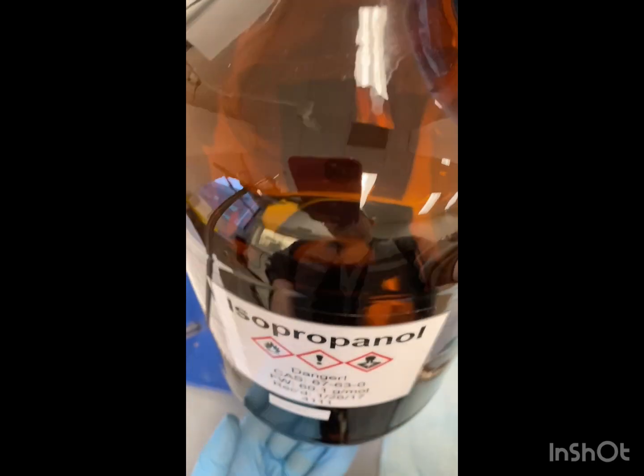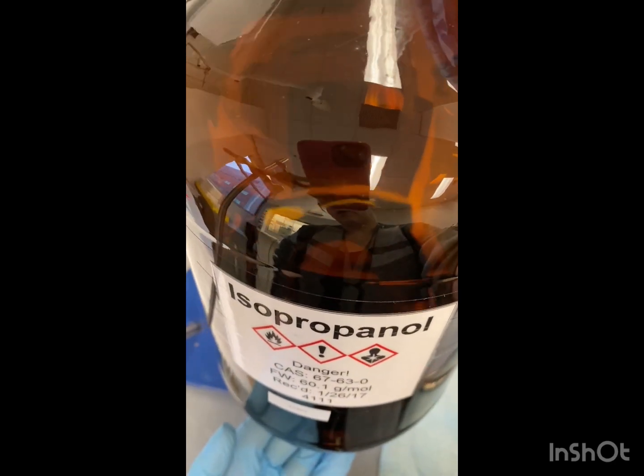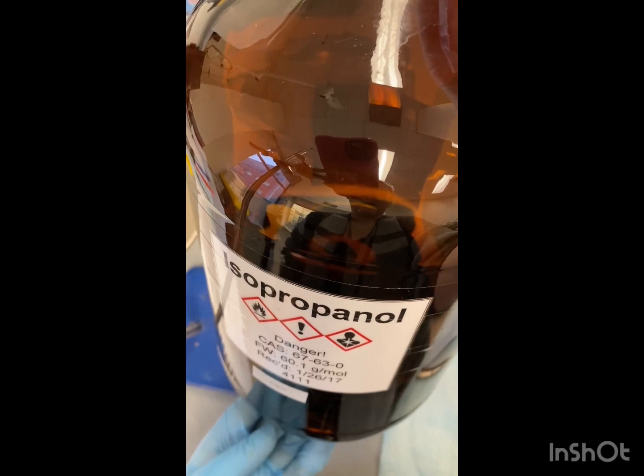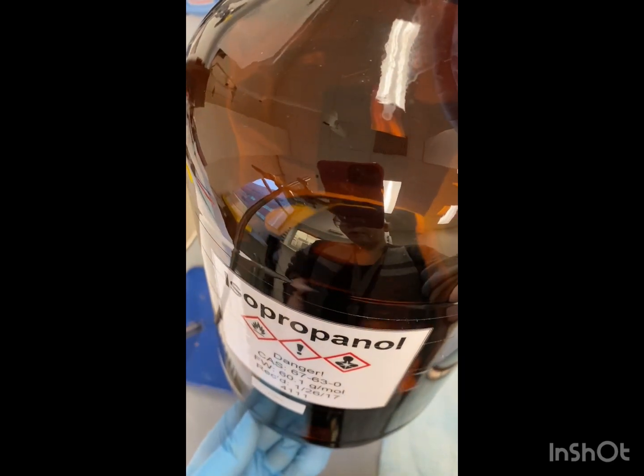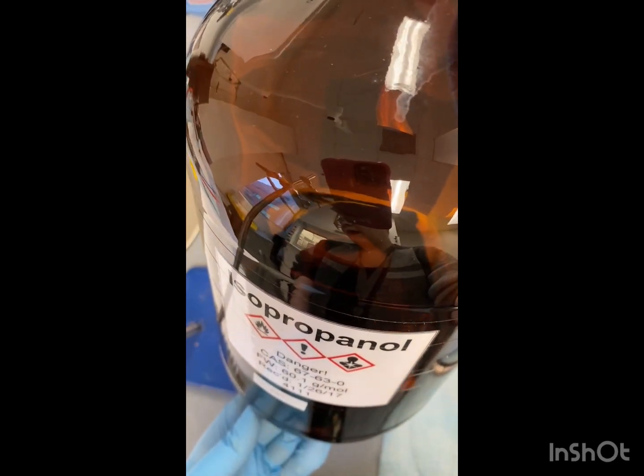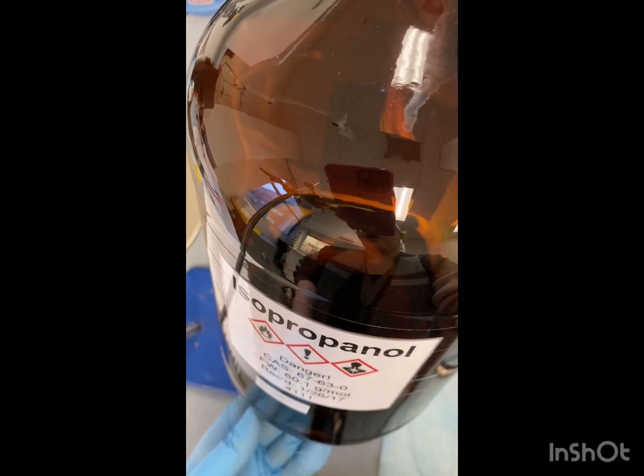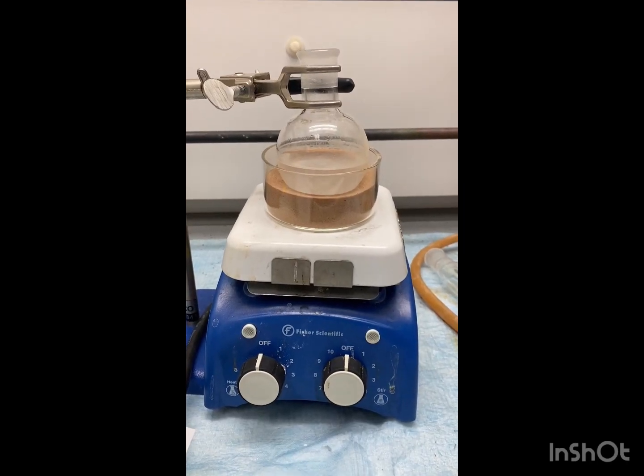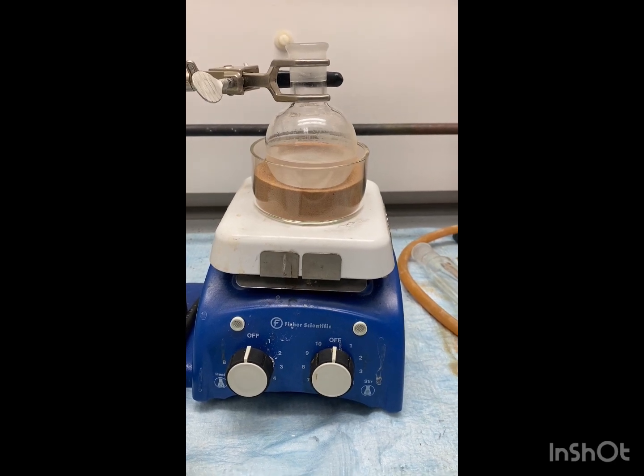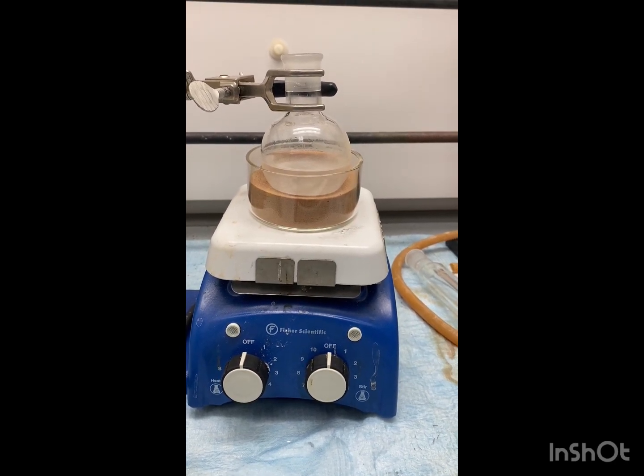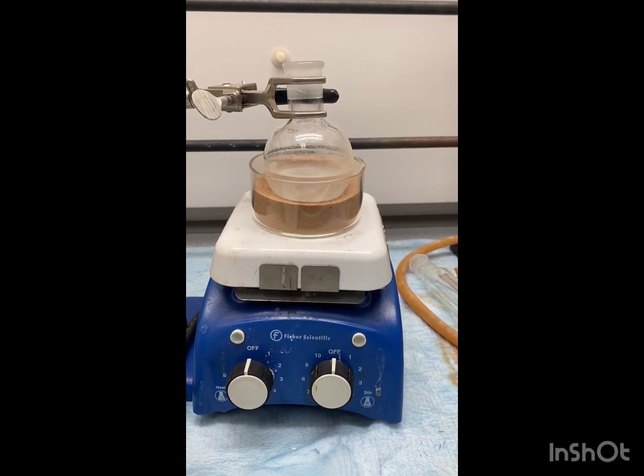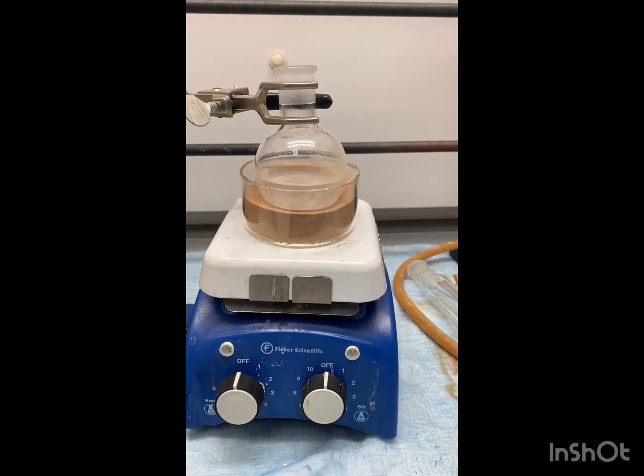So we've added our phenylsuccinic acid and our L-proline to our round bottom flask. Next, we're going to add 40 mils of isopropanol to the round bottom flask, and then we're going to add a stir bar and set up a reflux. So we have our phenylsuccinic acid, our L-proline, and our isopropanol and a stir bar in our 100 milliliter round bottom flask.